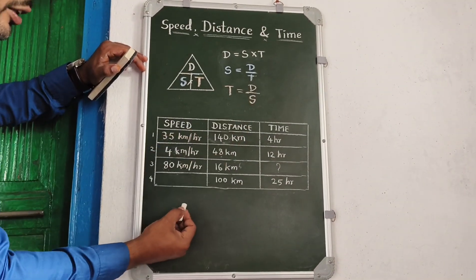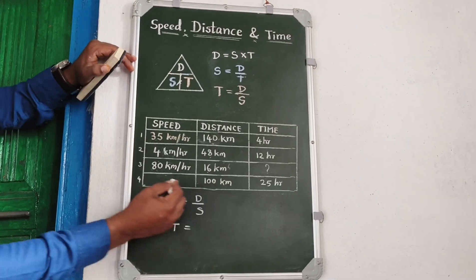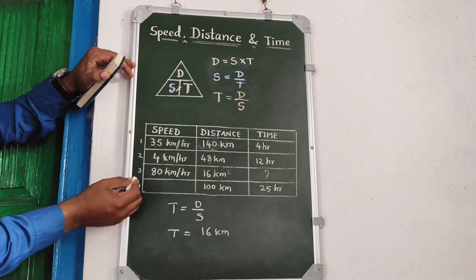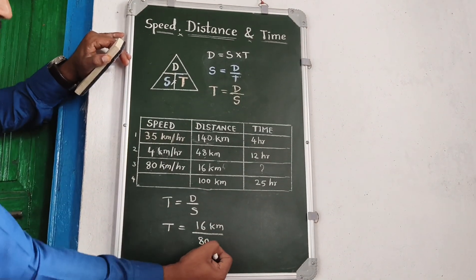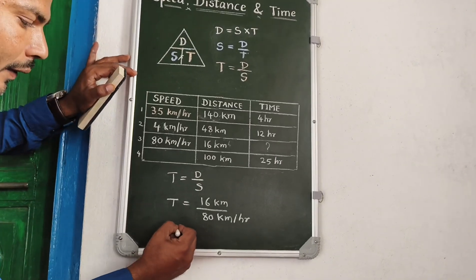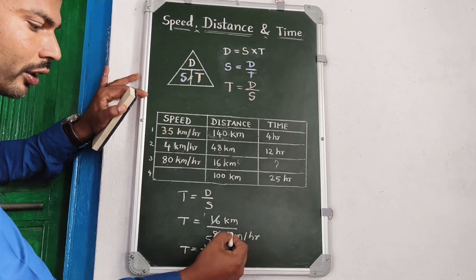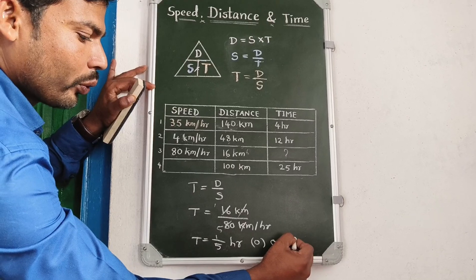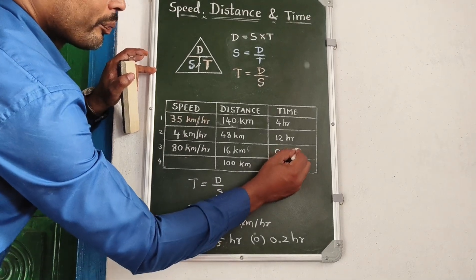Time is equal to distance by speed. Distance is 16 km, speed is 80 km per hour. T is equal to 16 by 80, which simplifies to 1 by 5, giving 0.2 hours. The answer is 0.2 hours.